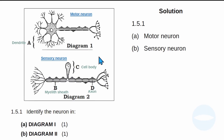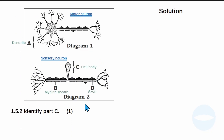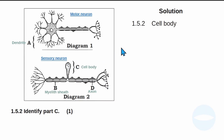Now let's go to the next question. The next question asks us to identify part C. Part C, like we said, is the cell body. The cell body contains a nucleus and controls the metabolism of the cell. The answer is cell body. As you can see, it's only one mark, so just write 'cell body' and you get all the marks.